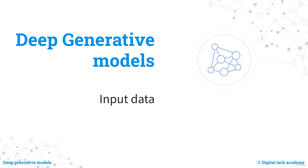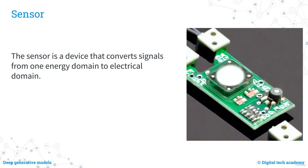In this lecture, we'll speak about input data. Any algorithm, including those of artificial intelligence, needs input data to process. If the data originally came from a physical signal, it must first be converted into an electrical signal by a sensor before it can be digitized and processed by the algorithm. The sensor serves as the device that translates signals from one energy domain into the electrical domain.